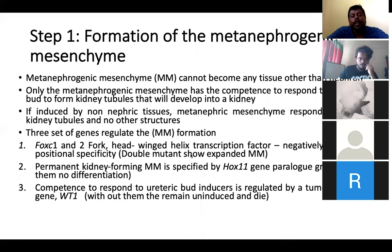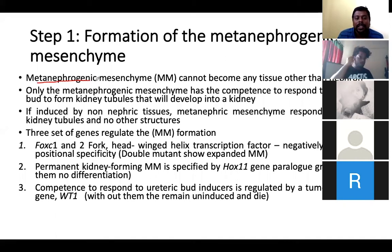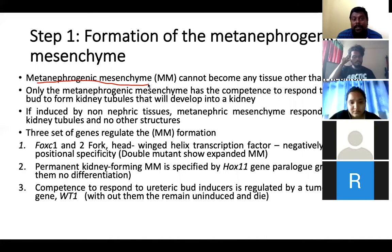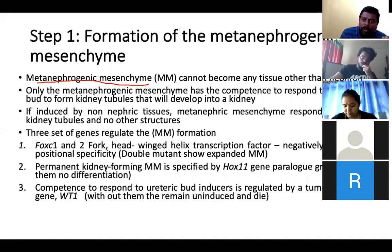This development takes place in eight steps. The first step is the formation of metanephrogenic mesenchymal cells. These cells are originally forming from the paraxial mesoderm that we studied in the last class. This particular tissue has a unique fate or competence — it cannot develop into any other kind of tissue; it will only form nephrons and kidney-related tissues.